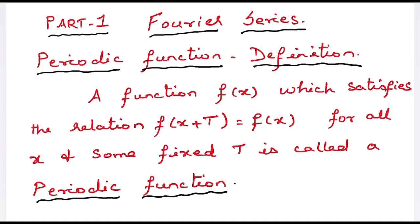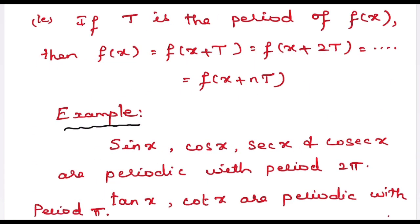So what is a periodic function? A function f of x which satisfies the relation f(x + T) = f(x) for all x and some fixed T is called a periodic function. That is, a function is periodic if the function values repeat at regular intervals. This regular interval is referred to as T and is called the period of f(x). That is, f(x) = f(x+T) = f(x+2T) = f(x+3T), etc., repeating again and again with a gap of period T.